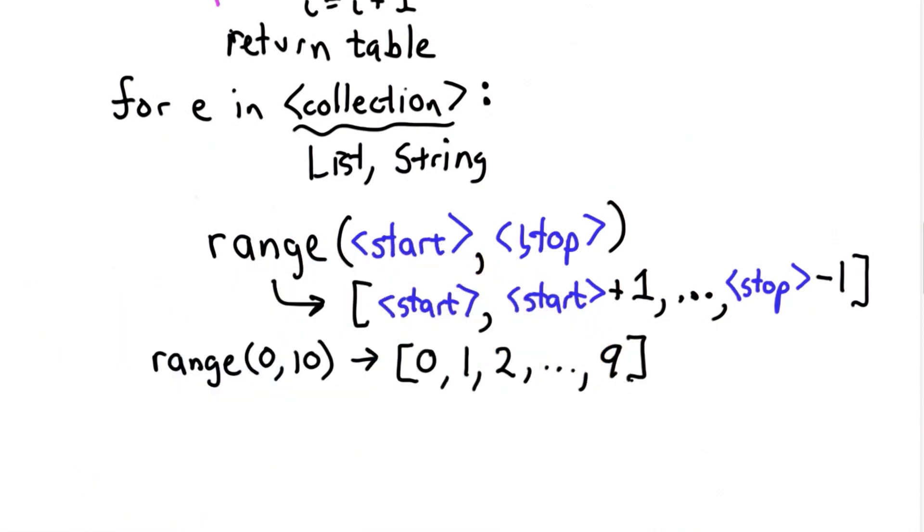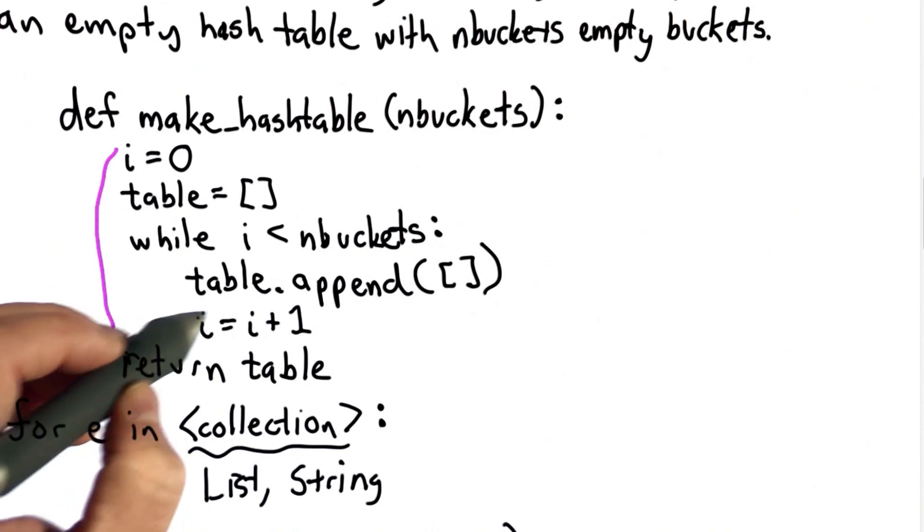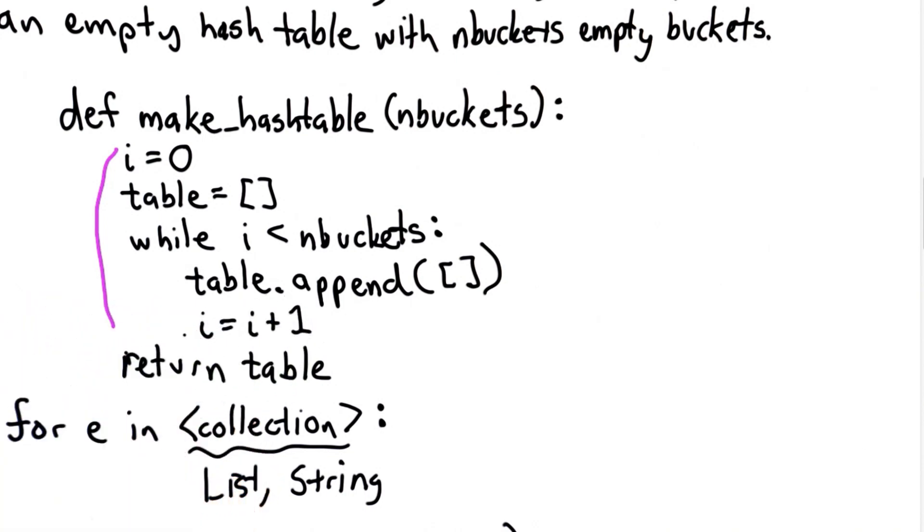So now that we know about range, we could change our loop here. Instead of having this while loop, we could use a for loop. And we prefer this for two reasons. The first is it's going to make our code shorter. Any time we can make code shorter, that's usually a good thing. The second is it saves us from the danger of forgetting to increment the variable.